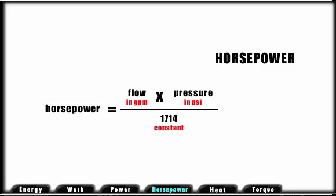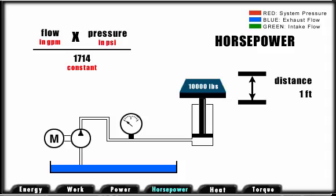In our illustration, we are lifting 10,000 pounds, this is our force, a distance of 1 foot. This is the work to be accomplished. If we lift our load in 2 seconds, we have defined a power requirement. This may be expressed as hydraulic horsepower.